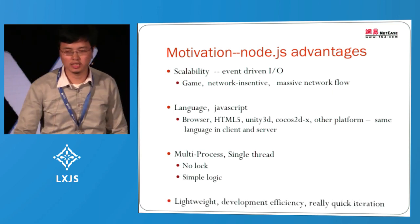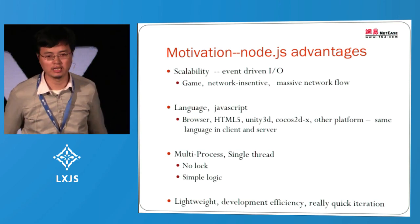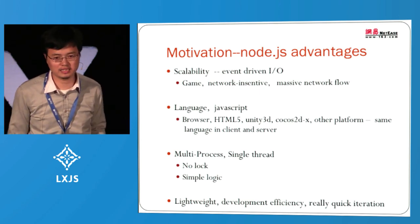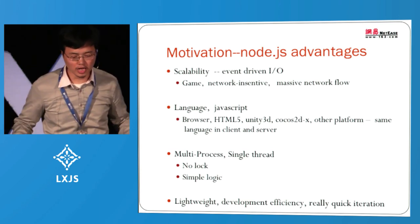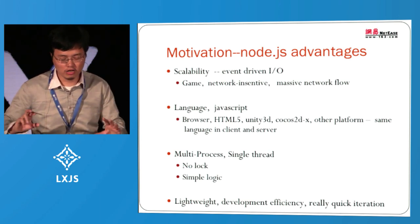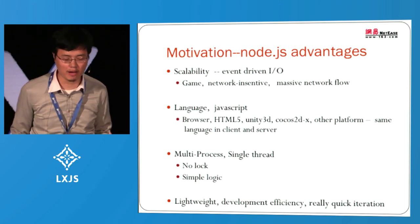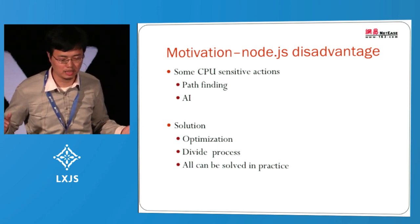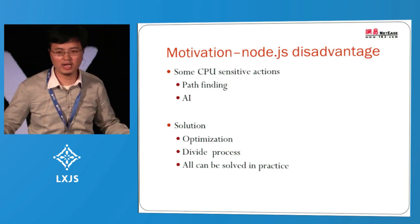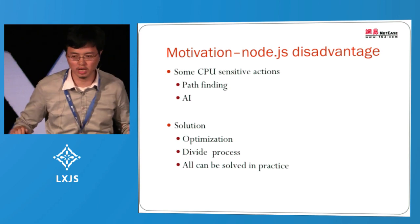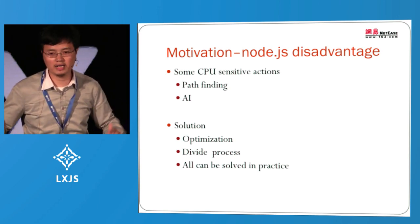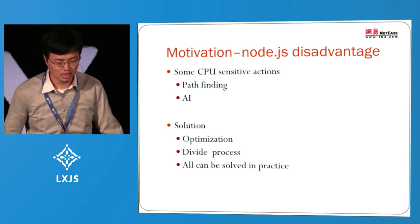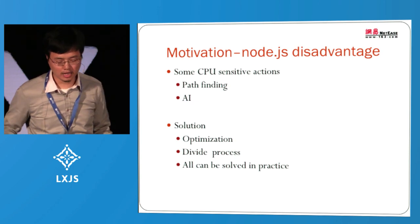The fourth reason is lightweight. Usually game server development is quite heavy — needing two machines, many processes, and a slow startup. But with Node.js, I can develop everything in one machine, occupy very few resources, and start up really quickly. Of course there are some disadvantages: there are CPU-sensitive actions in game servers, like pathfinding and AI. But in practice, these can all be solved. For example, pathfinding — we can divide these actions into a single process, and AI does not occupy too much CPU either, as you can see in our demo.